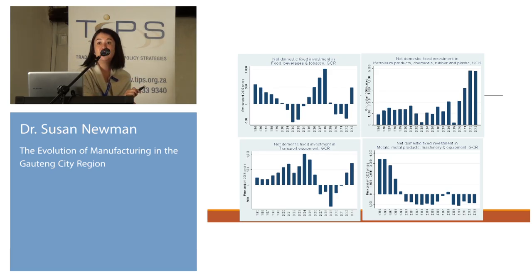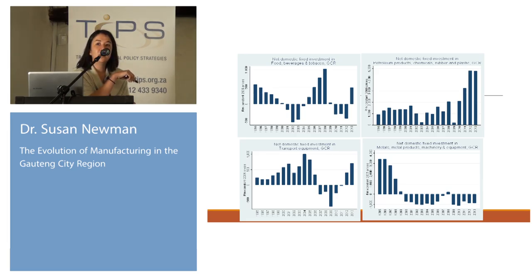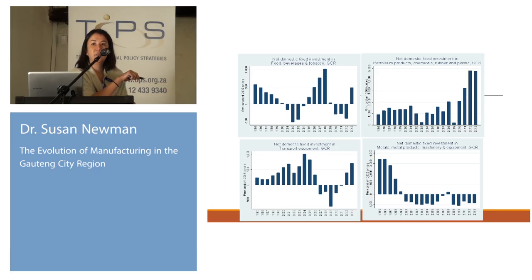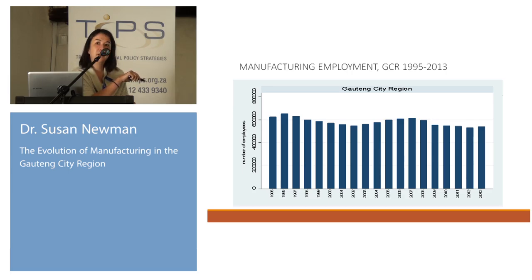This aggregate picture masks enormous diversity across the industrial subsectors. Looking at the four largest manufacturing subsectors in Khauteng by GVA, sectors like food and beverages and tobacco follow largely the aggregate pattern, and similarly with transport equipment. But what really bucks the trend is petroleum products — we see an enormous increase here, probably related to Sasol.